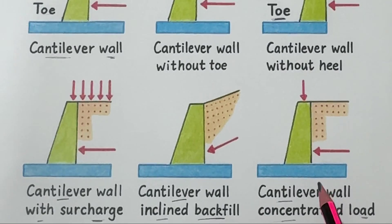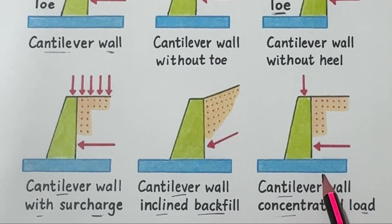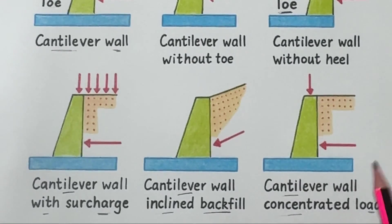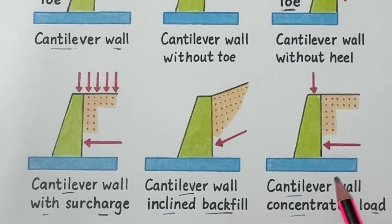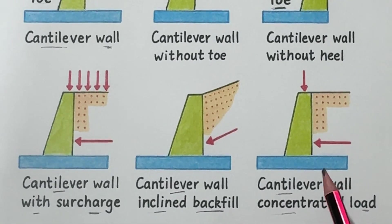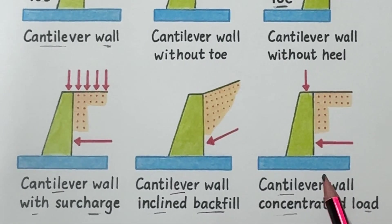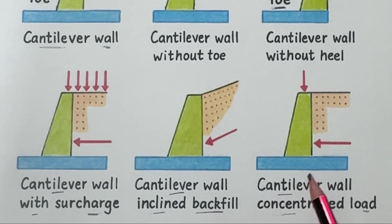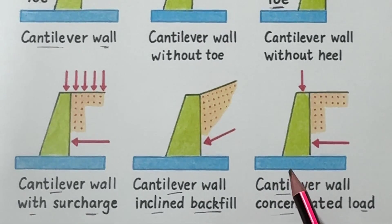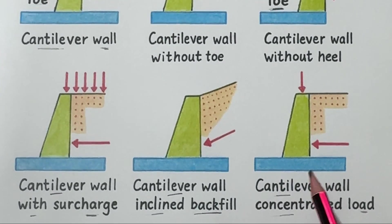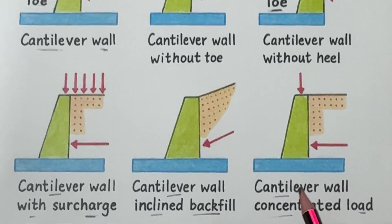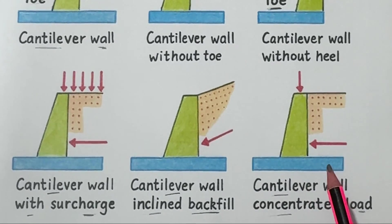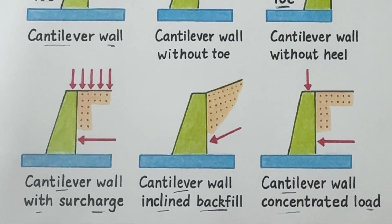Number six: cantilever wall with concentrated load. Here instead of an even pressure there's a point load — maybe from a heavy structure or a column sitting close to the wall. That concentrated force increases stress at a particular point, so the wall must be reinforced carefully in that area.